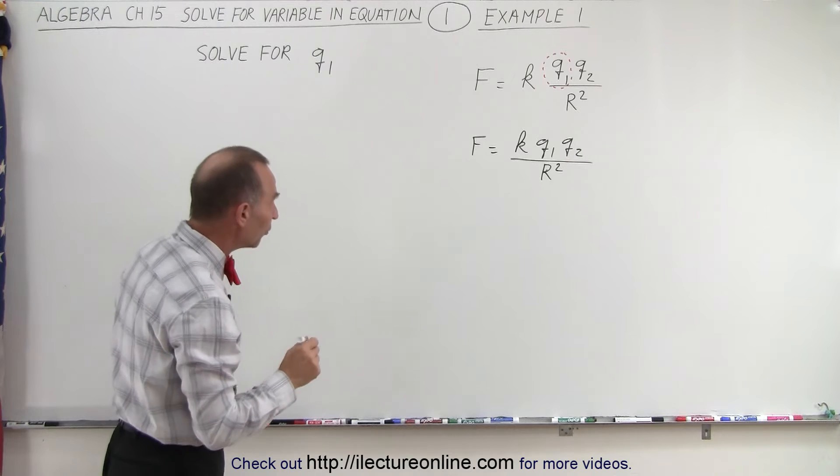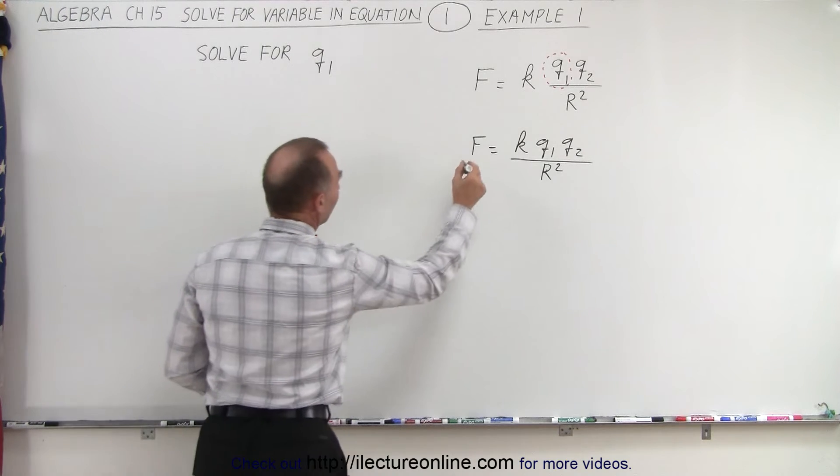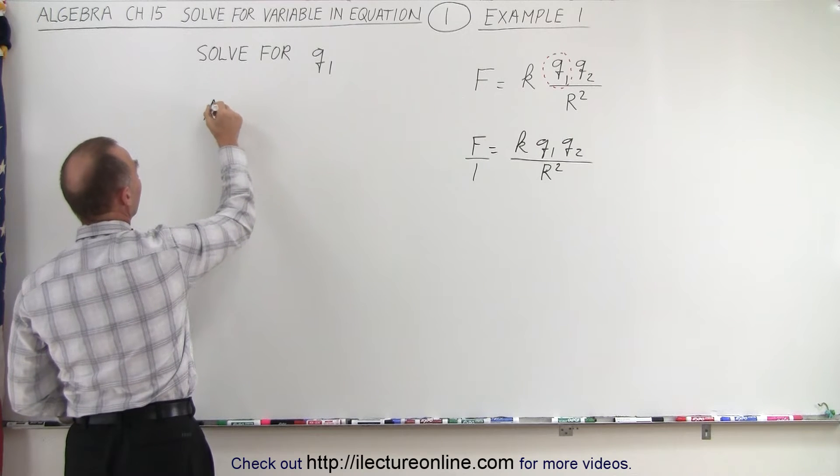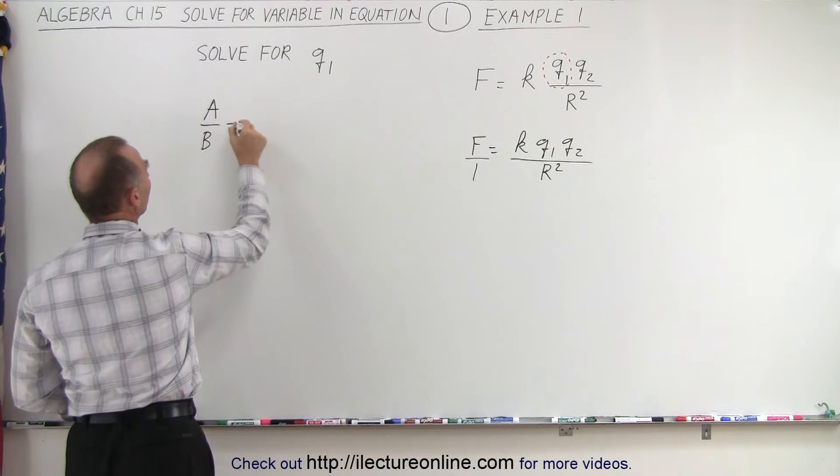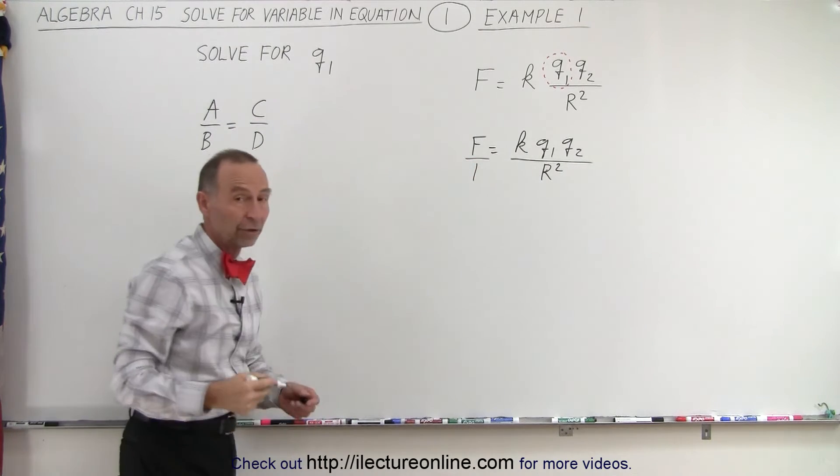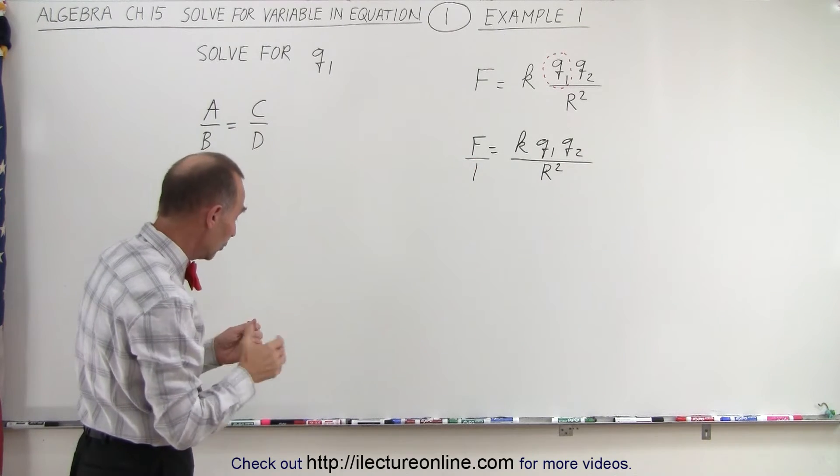So now, we also need to keep in mind that we can write this as F over 1, and then we have something in the format of A over B equals C over D. Now of course, the C could be the product of a number of things like that, KQ1 and Q2.